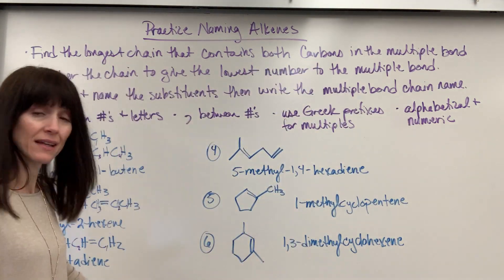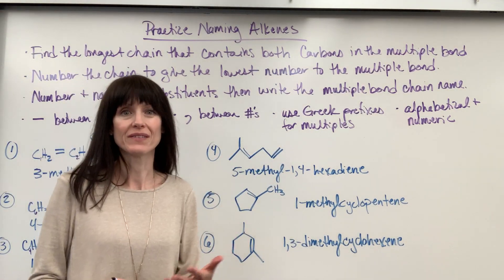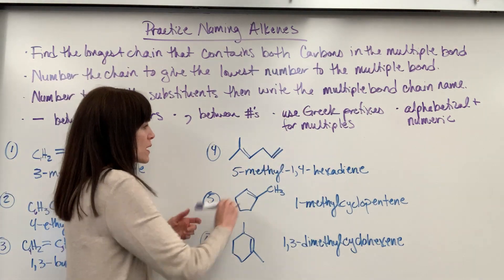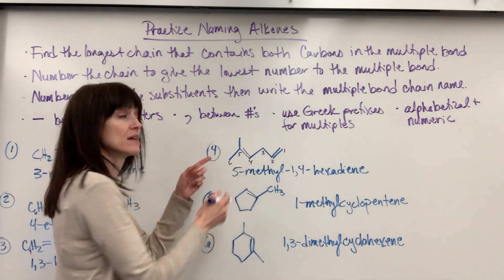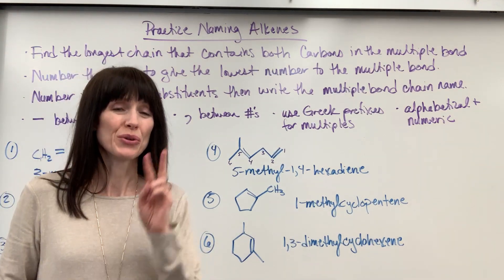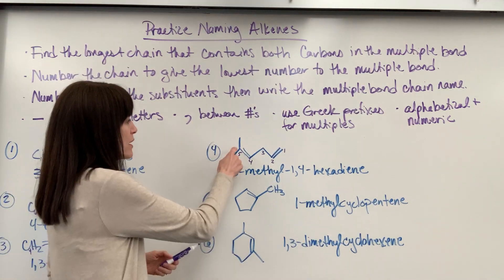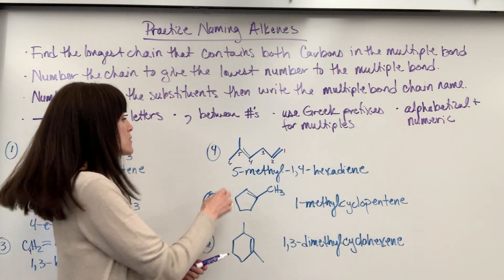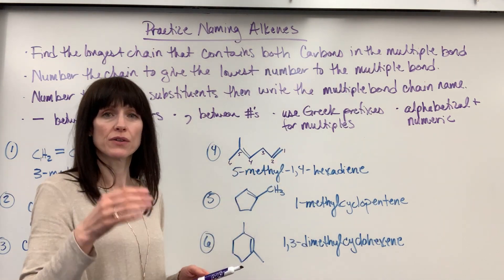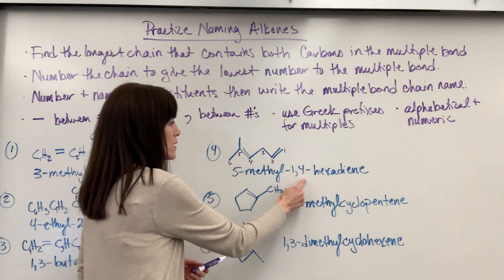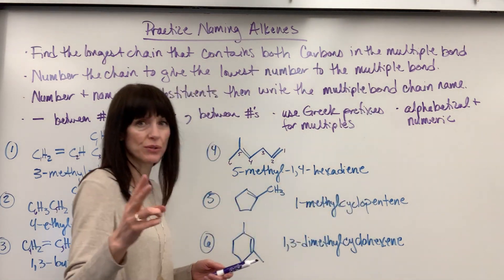Let's look at number four using skeletal structures. I see two double bonds. We want to give these the smallest numbers possible. Starting from the first carbon: one, two, three, four, five, six — the parent chain has six carbons and two double bonds, so it's a diene. I have a methyl group on the fifth carbon, so that's 5-methyl. The first carbons to touch the double bonds are carbon one and carbon four. The name is 5-methyl-1,4-hexadiene.